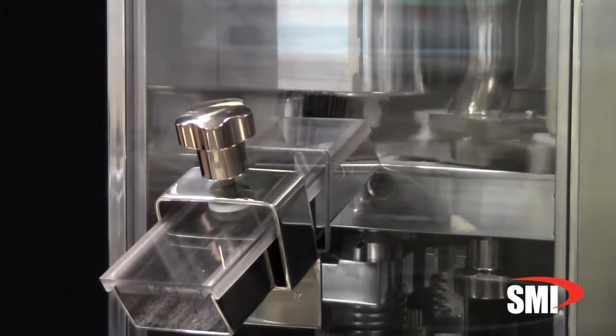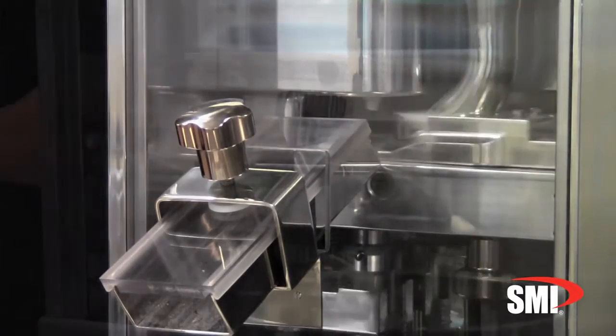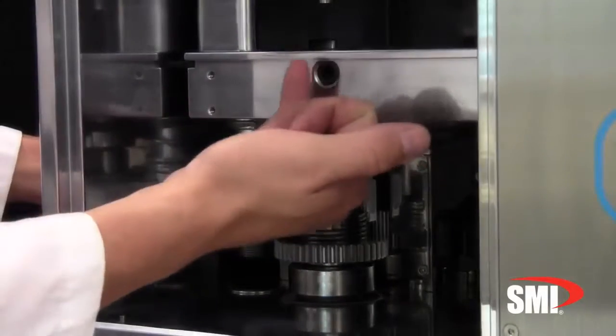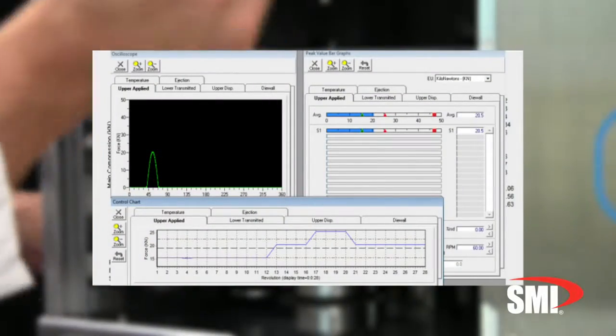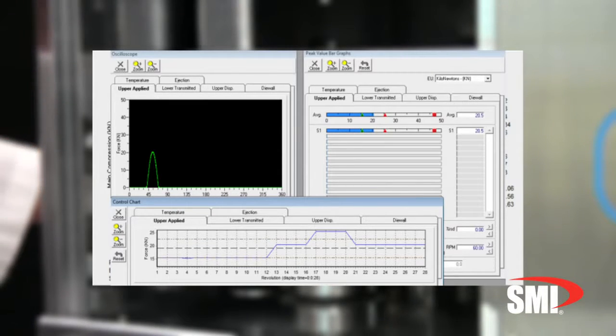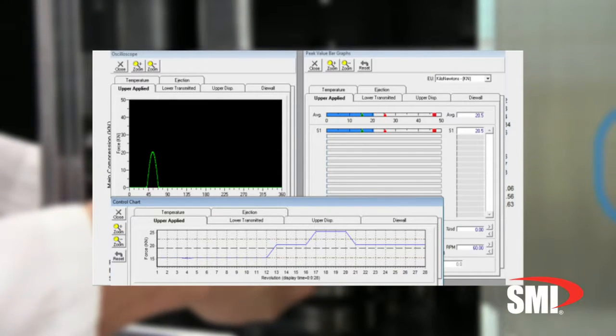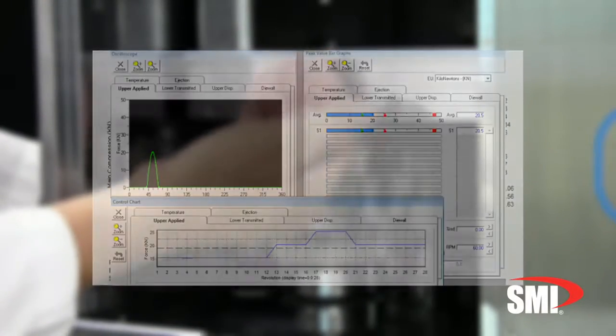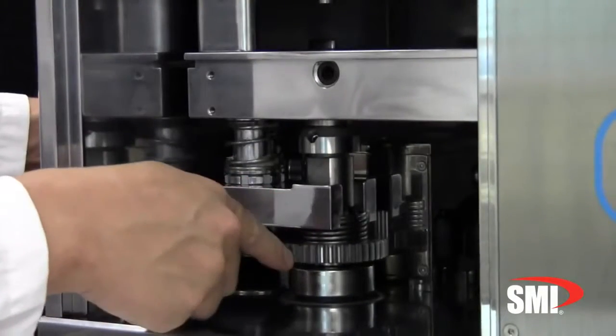The Director MiniPress module includes real-time displays for the upper punch applied force, lower punch transmitted force, residual die wall force, ejection force, temperature, and punch displacement for in-die thickness measurements.